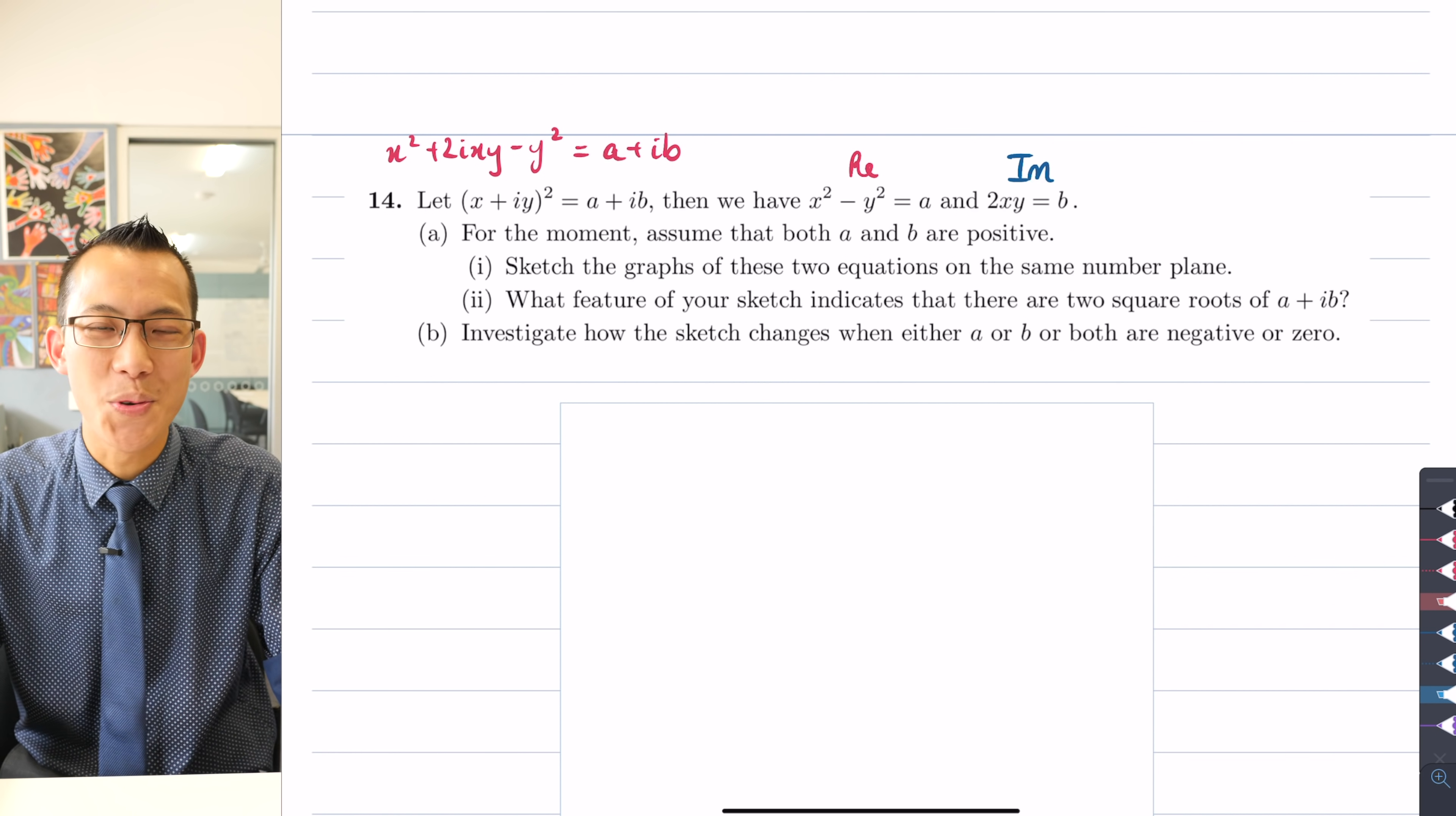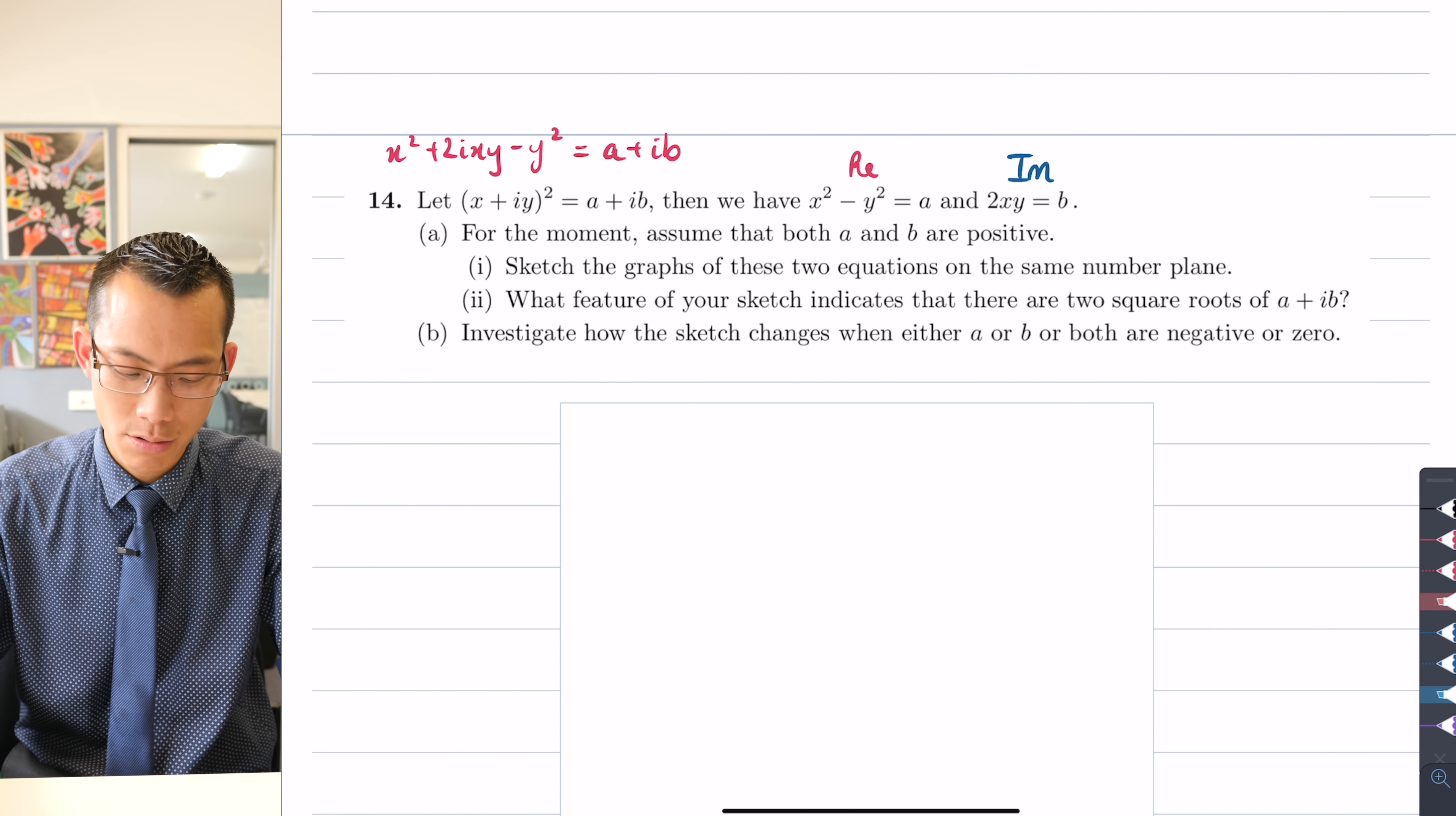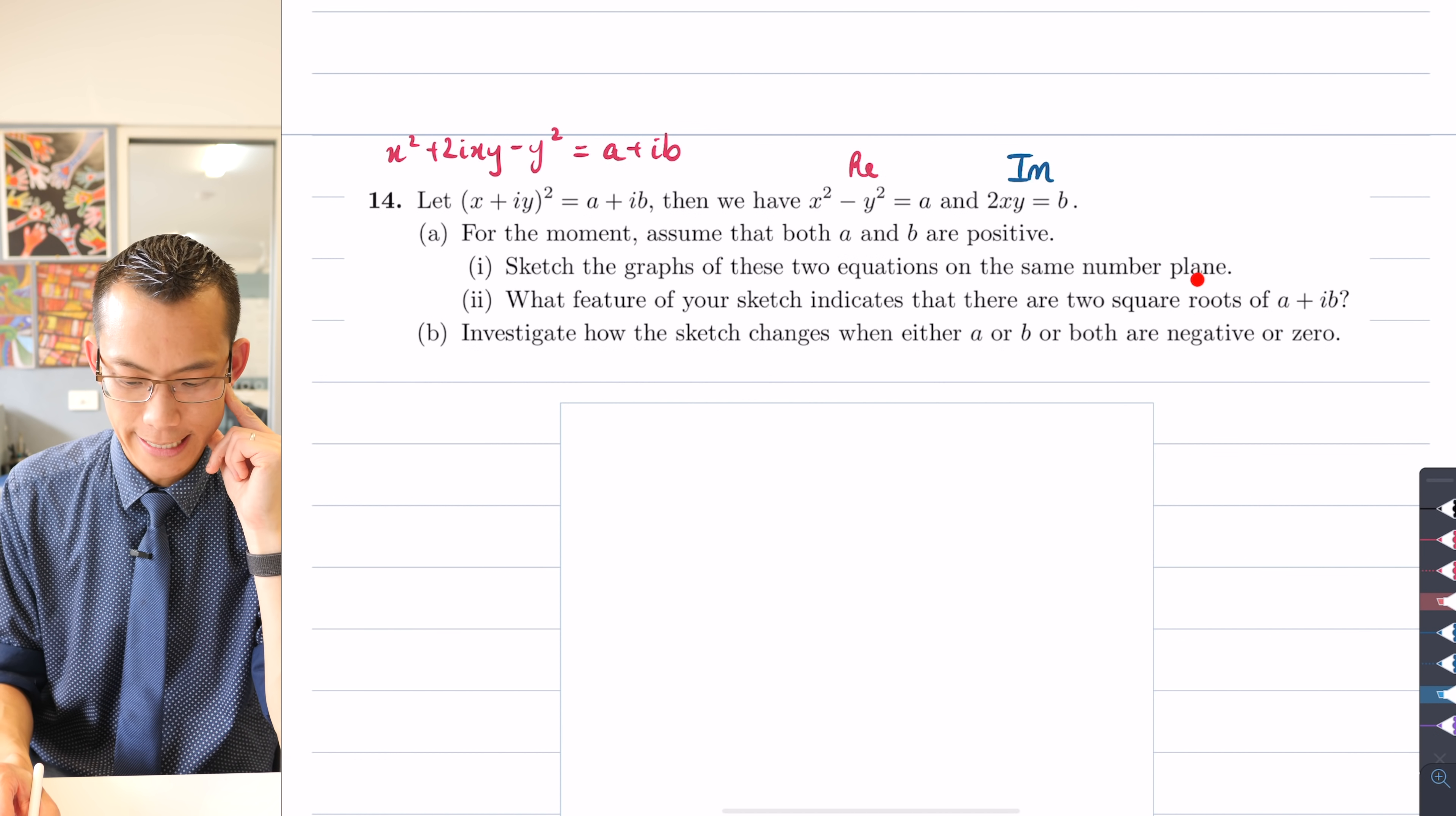Now we've been used to solving those simultaneous equations just by crunching the algebra, by doing some substitution, a bit of rearrangement, and then your solutions arise from these equations. But what this question is asking us to do is to think about them graphically. For the moment, assume that both a and b are positive, then sketch the graphs of these two equations on the same number plane.